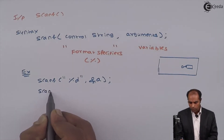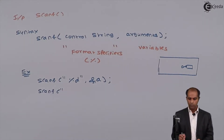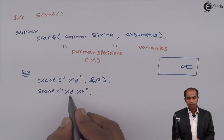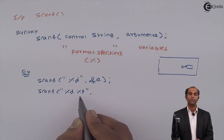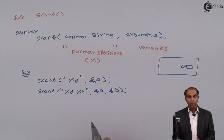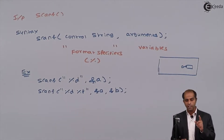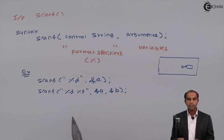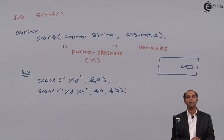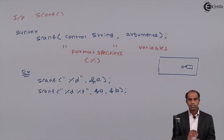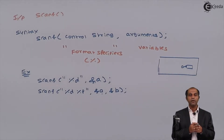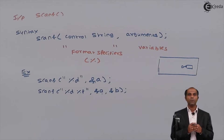I can have a scanf instruction to read two values at once. In that case I'll use %d %f — two format specifiers. The first specifier reads an integer and stores it into the address of a, where a is declared as integer. The second specifier reads a float value and stores it into the address of b, where b is declared as float. So I can use scanf to read multiple values from the user at once.